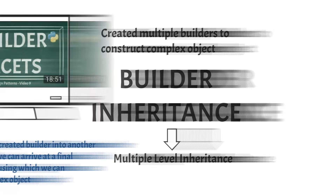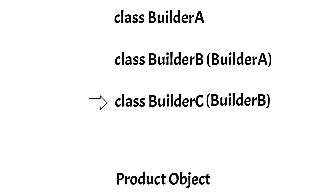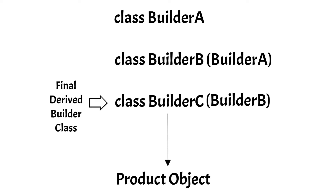If it is not making much sense, here is a small example. Say you want to construct a complex object for a particular product. You decide to segregate the creation of this object into three parts, and for those three parts you need to write a builder. So you create three builders: Builder A, Builder B, and Builder C. You can inherit Builder A into Builder B, and then inherit Builder B into Builder C. So Builder C would be the last and final derived class, which you use to construct your complex product object.